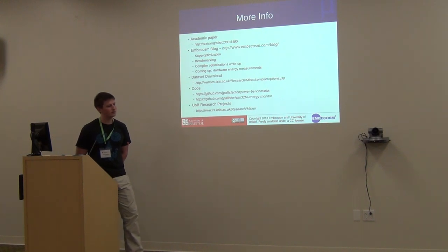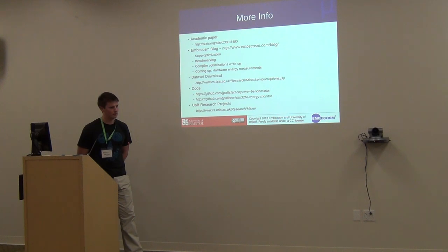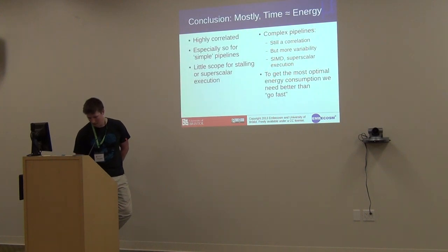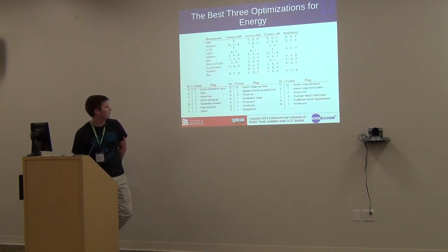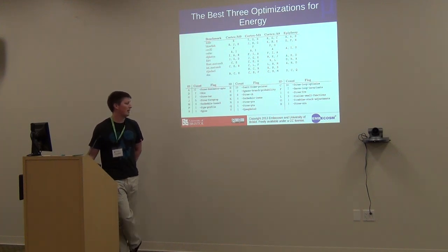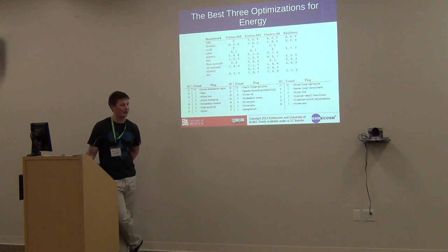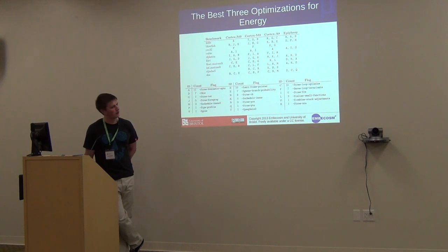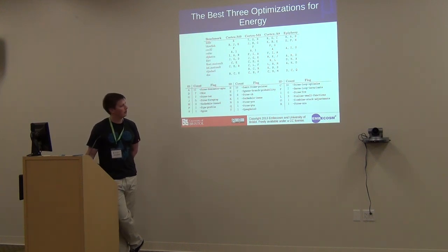Regarding loop unrolling, which is typically oriented more towards pipeline-kind processes — would that appear here as bad for energy consumption? Quite possibly. Loop unrolling doesn't appear in any of the top three optimisations, which would seem to suggest it's not a good optimisation for these platforms and benchmarks — and that appears to be independent of whether the architecture is out-of-order pipelined or not.